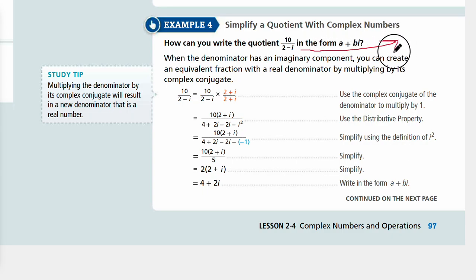The complex conjugate would be 2 plus i. In order to multiply by 1, we want to multiply the complex conjugate over complex conjugate so we're not changing the fraction while simplifying it. So 10 over 2 minus i times 2 plus i over 2 plus i would give us a real number in the denominator.